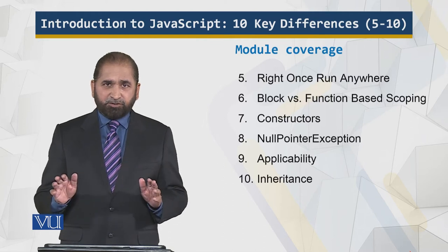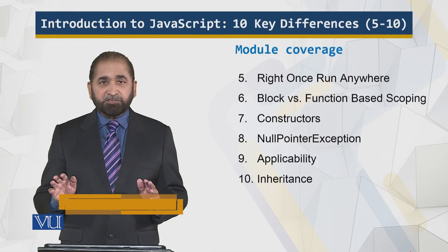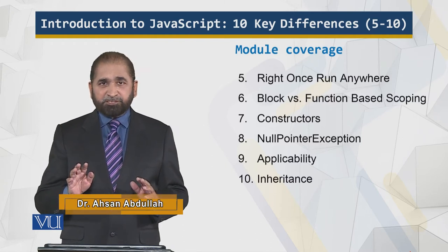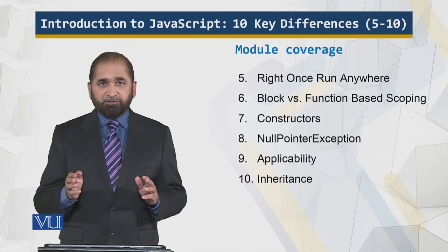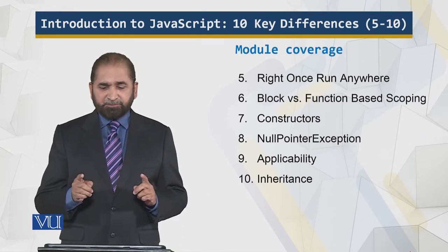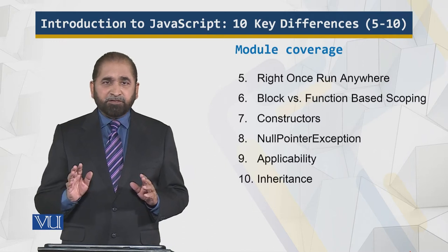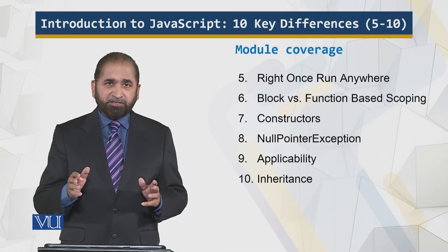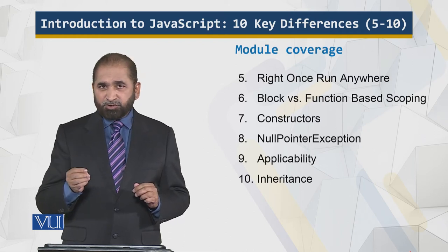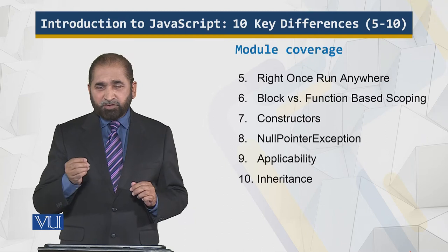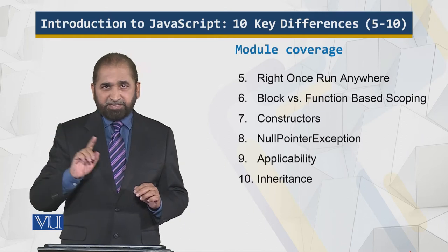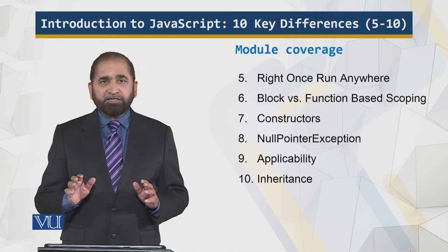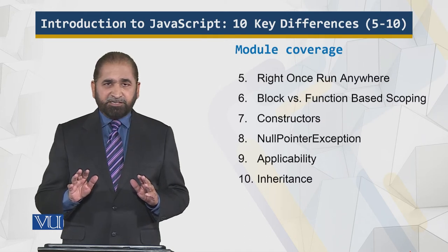This is the coverage of this module: write once run anywhere, which is very true for Java but not for JavaScript. I will explain block versus function-based scoping — the scope of the variable is different in Java versus JavaScript. Constructors, null pointer exception — in JavaScript the application is not allowed to access main memory, so this exception is not going to happen. And applicability and inheritance.